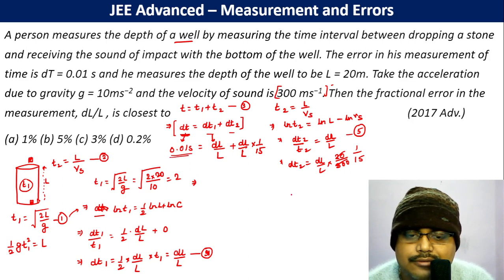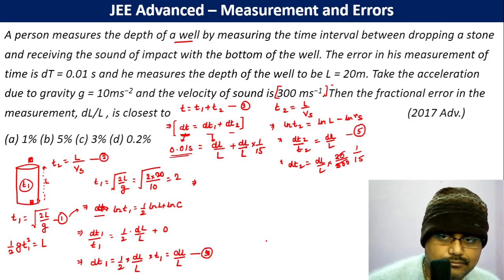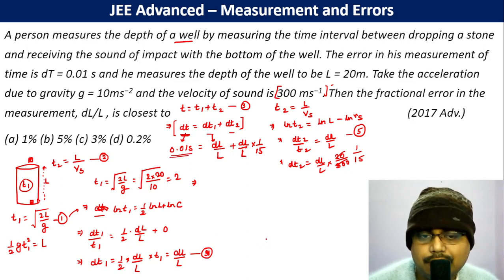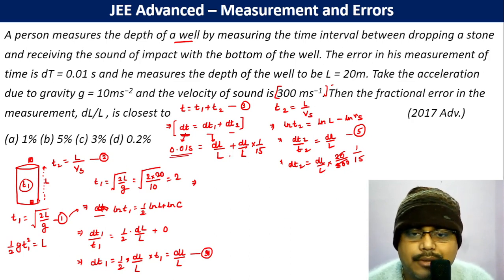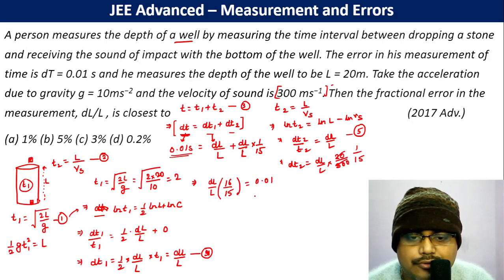And this is dt, which is 0.01. So what we have to find out is dL/L. So (dL/L) times 16/15 = 0.01.